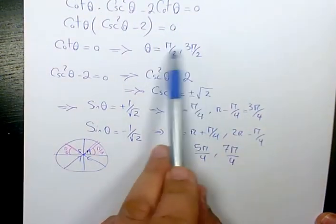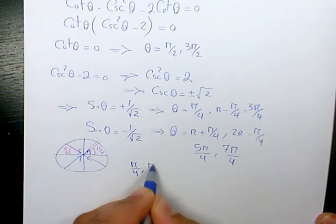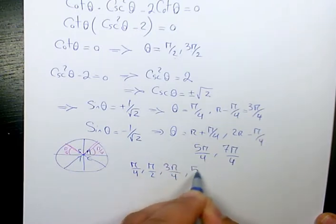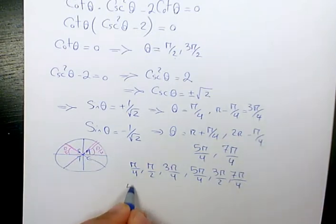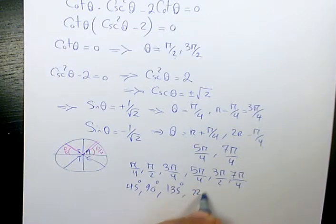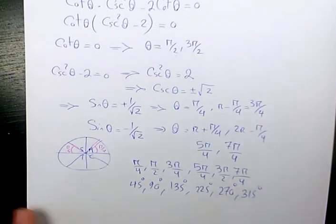So we have 6 answers in terms of radians and in terms of degrees. This one is going to be 45 degrees, 90 degrees, 135 degrees, 225 degrees, 270 degrees, and 315 degrees. So these are the 6 answers to this question.